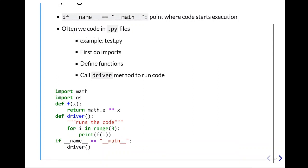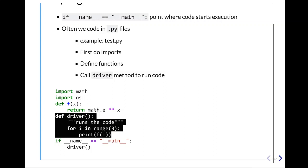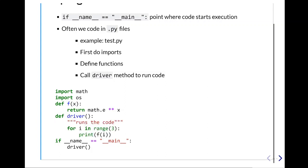So, let's say we create a file, and we call it test.py. We first are going to do our imports. We're going to define our functions, and then we can either call a driver function to do our code, or we can put all the logic in that if statement. So, here, we're going to import math and OS, and we're going to define our function. We're going to do e to whatever x is, and then call the driver, which is going to run f, and then it's going to start the execution right there in that if underscore underscore main.